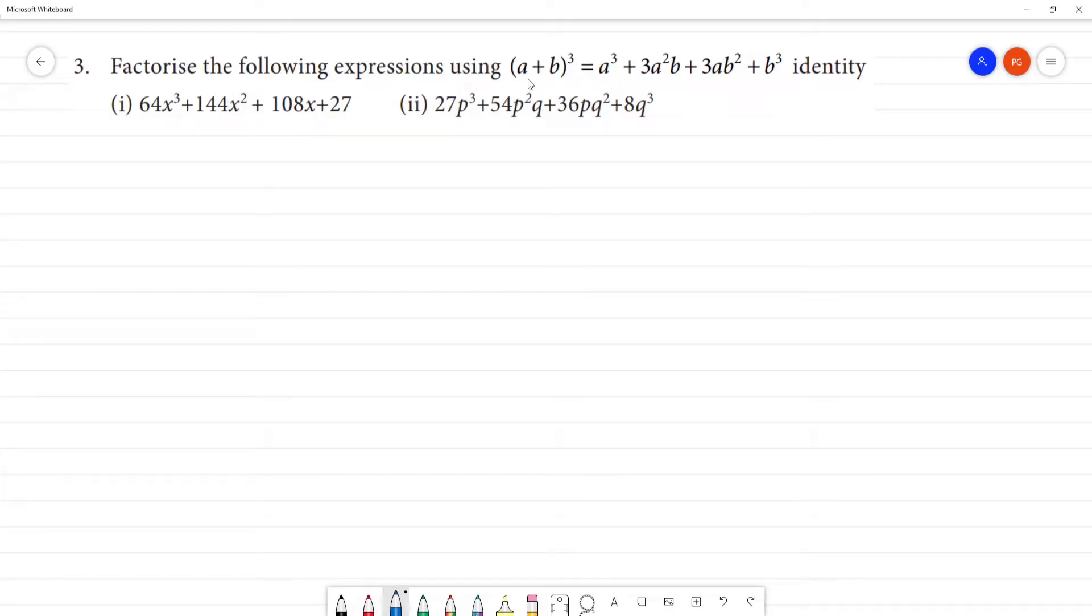Factorize the following expressions using the (a+b)³ = a³ + 3a²b + 3ab² + b³ identity.